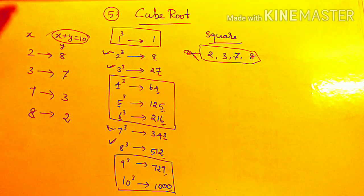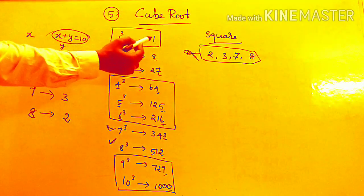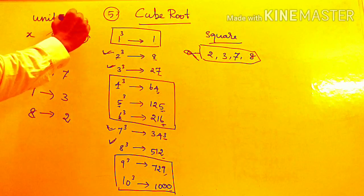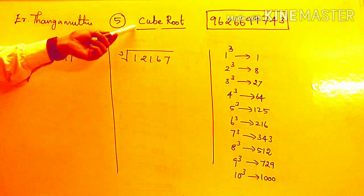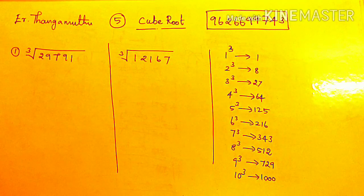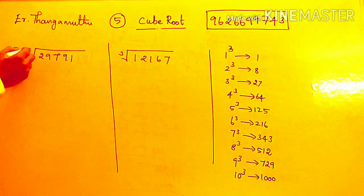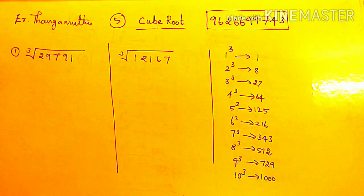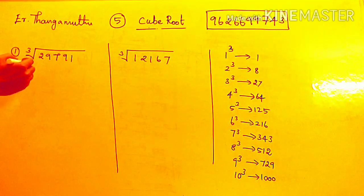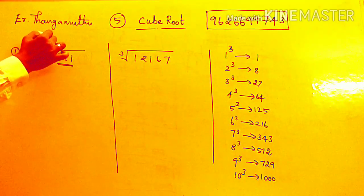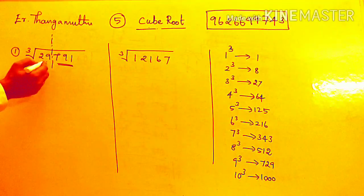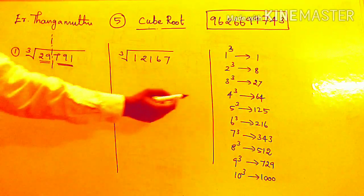Let's look at an example. The cube value's unit digit is the basic. The unit digit is fundamental. In the cube root, we consider the last 3 values for the unit digit. The remaining values give the tens place. The last 3 values determine the unit digit, and the exit limit (remaining digits) determines the other part of the answer.